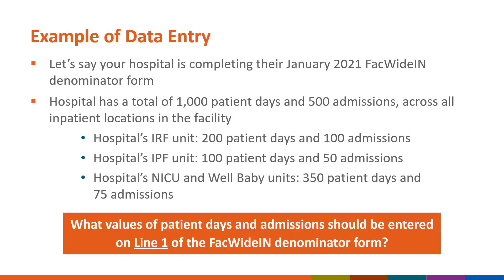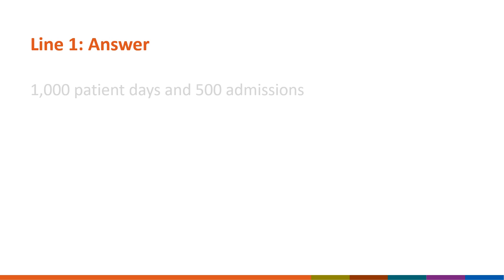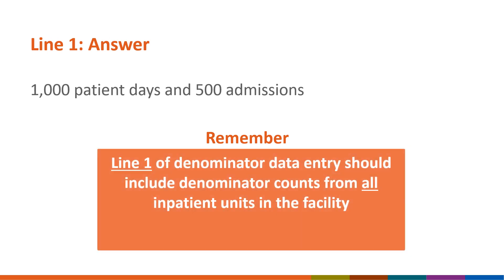What numbers should the facility enter on line 1 of the FACWIDEIN denominator form? Feel free to pause this video to complete the calculation. The correct answer is 1000 patient days and 500 admissions. Remember, the only units that should be excluded from line 1 are outpatient locations or any location that is enrolled in NHSN as a separate facility.